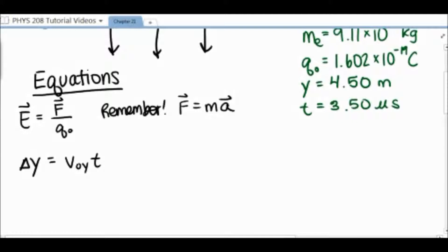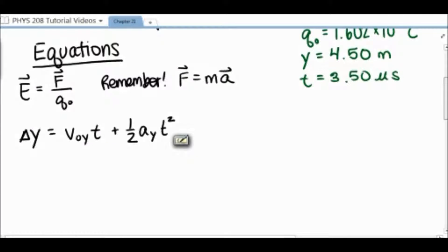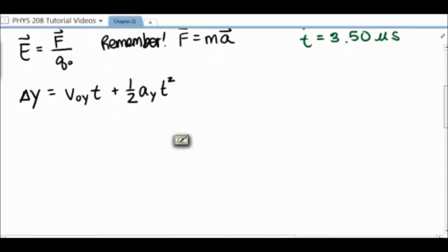If you remember our old kinematics equation, the change in y or change in x is equal to initial velocity in that direction times time plus half the acceleration in that direction times time squared.